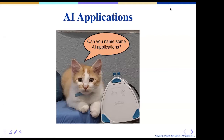Siri — yes! Alexa — absolutely. Those are all powered by AI. Very good. Somebody said self-driving cars — that's very good. Amazon Alexa, Google Mini, Google — if you use Google for search, that is definitely AI powered. Computer that plays chess — very good, that is true. Computers playing games — I'm actually going to show you a couple of videos of computers learning to play games. And robots — absolutely. Excellent answers, guys.